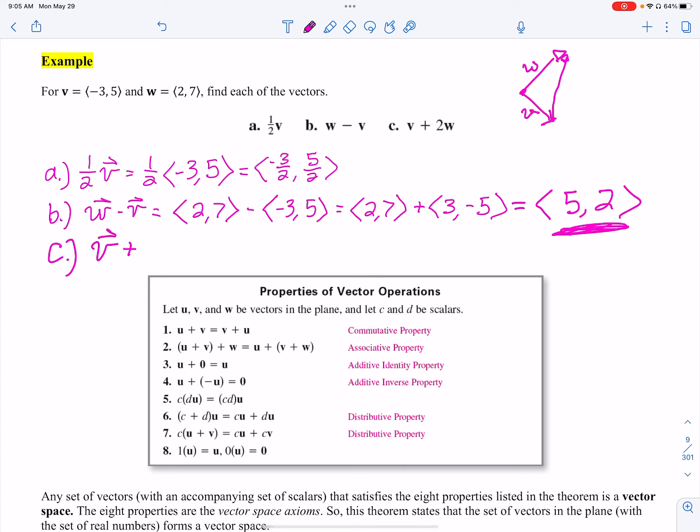Let's do c. We got v plus two w. So v is negative three, five plus two times w. We distribute that out. Distribute goes through. I got four, 14. So the answer here, if I add my components, I got one, 19. It's not too bad. It's exactly what you would want to do when you're adding vectors and subtracting. Multiplication is not going to be as nice once we get there.